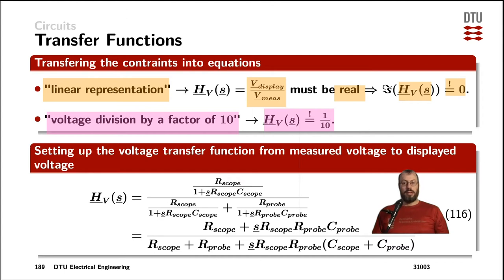So basically, we are forming a voltage divider of two impedances, where both of those impedances are a parallel connection of a resistor and a capacitor, here indicated with the indexes scope and probe. The voltage that we are measuring across is the one of the impedance of the scope components. And the one which is in series with that one is the impedance of the probe components. So we can form the voltage division, which is the transfer function.